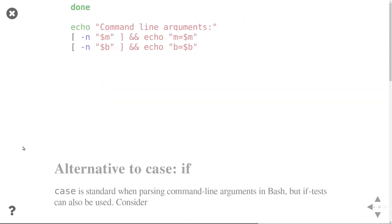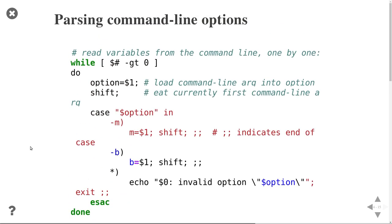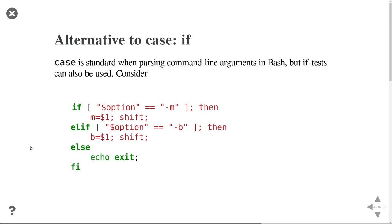You'd probably want to exit with code 1 on an invalid argument since it's an error. What I've shown with the case statement you could also do with if statements - it's the same thing. You could check if the option is equal to -m, then proceed, and so on.